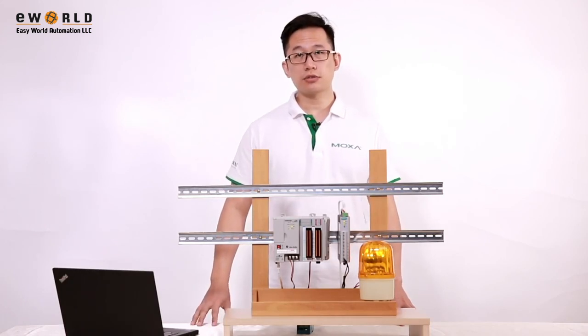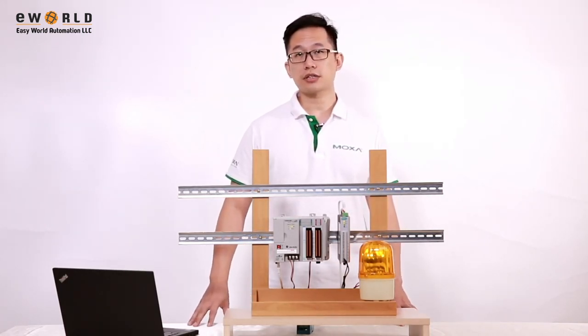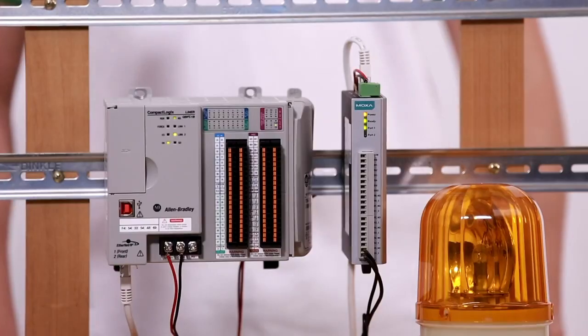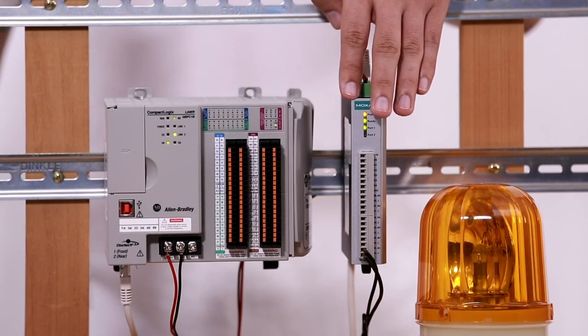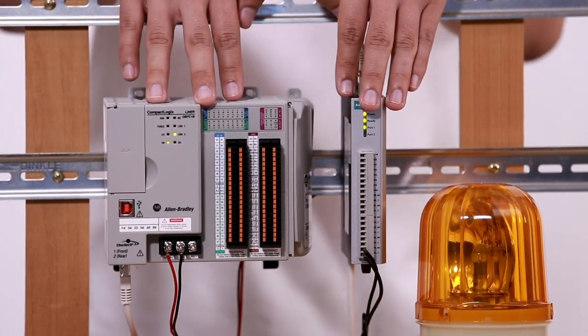Moxa's IO-Logic E1200 series is the ideal solution when you need IO connectivity for your PLC. It takes just three steps to connect your IO-Logic E1200 series device to an Allen-Bradley PLC.